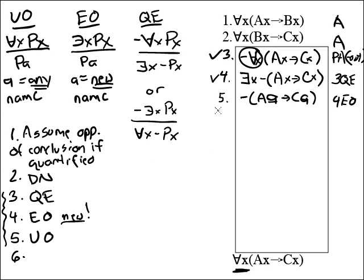Okay, so now we're on to universal out. We've got two universal outs to do, one and two. Let's work with line one first. The rule says drop the quantifier. Rewrite the formula, replacing the variable with a name. It's going to be 1UO. What name should we choose?